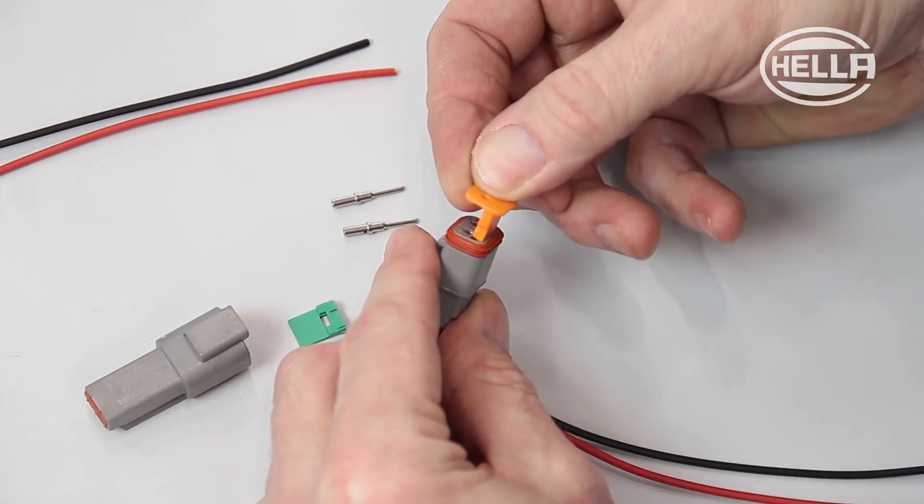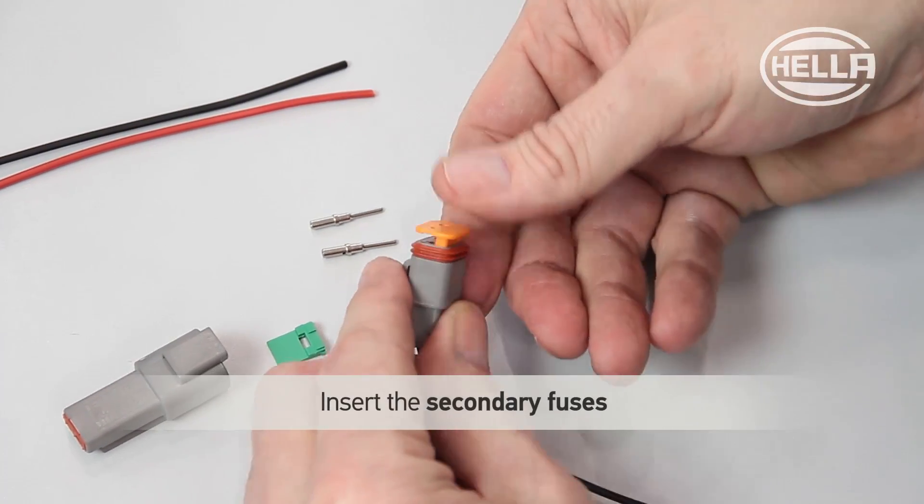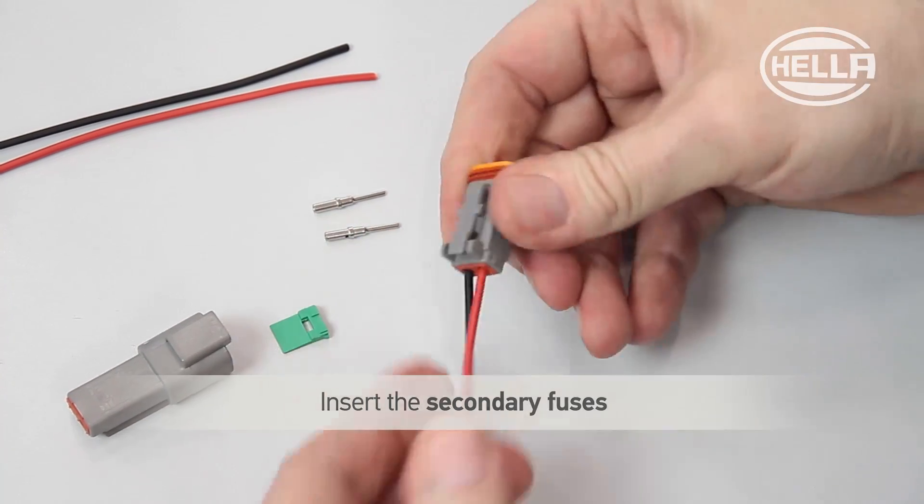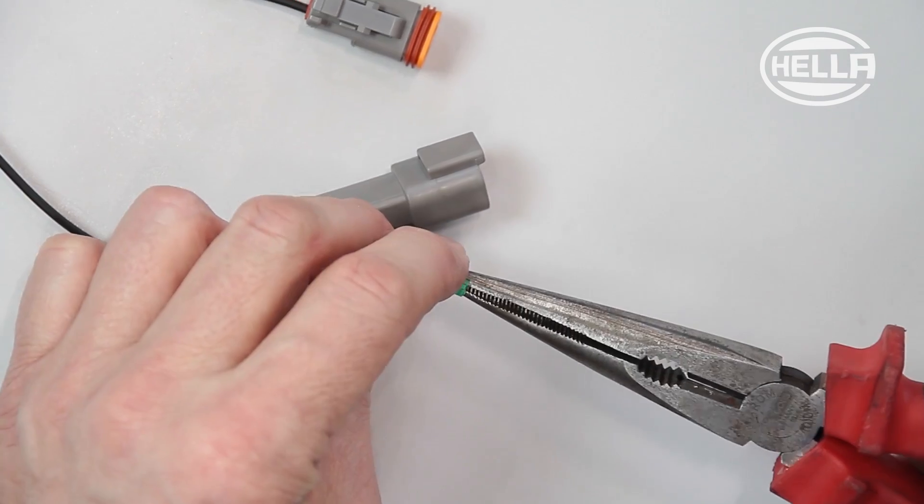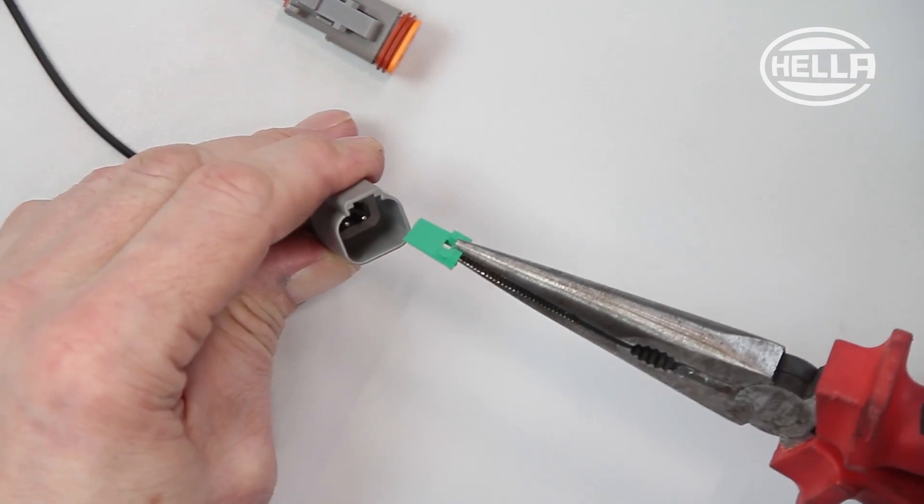To complete the plug connection you need only to insert the secondary fuses in the connector and the housing. We recommend you use needle nose pliers to insert the secondary fuses in the housing.